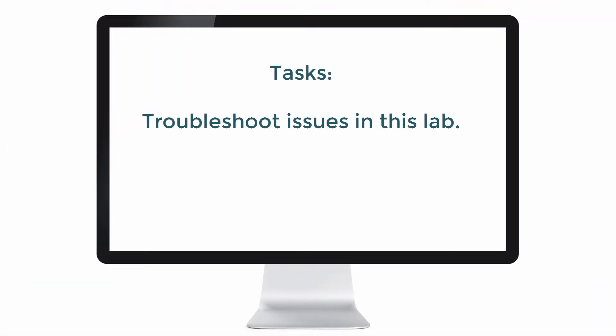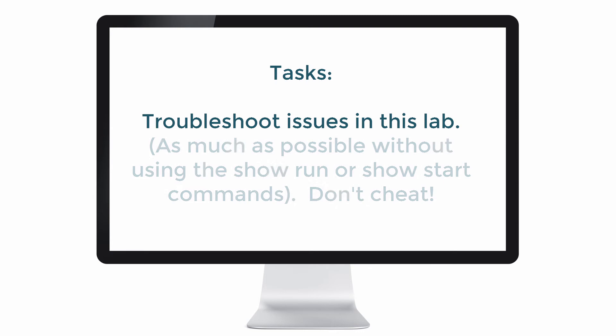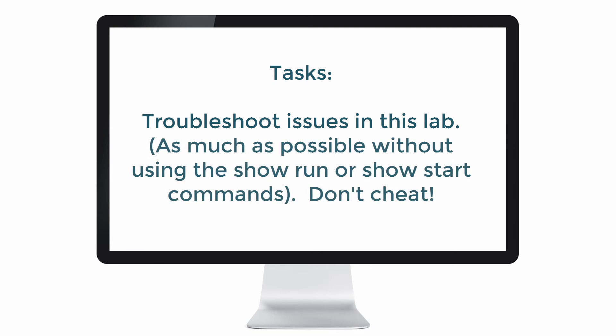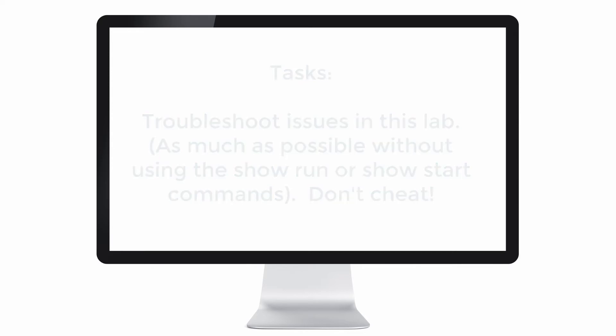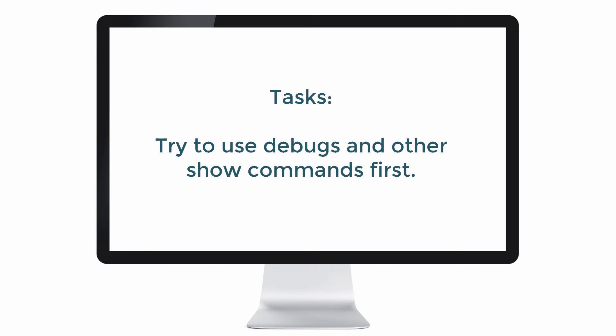In this lab we are told that we need to troubleshoot issues as much as possible without using the show run or show start commands. In other words, don't cheat. Don't just do a show run and look for problems. Try and use debugs and show commands and other options to find specific issues in the network. Only use a full show run or show start as a last resort.